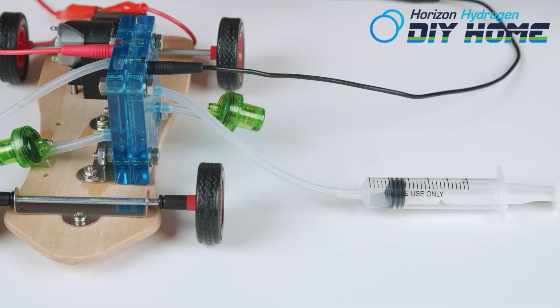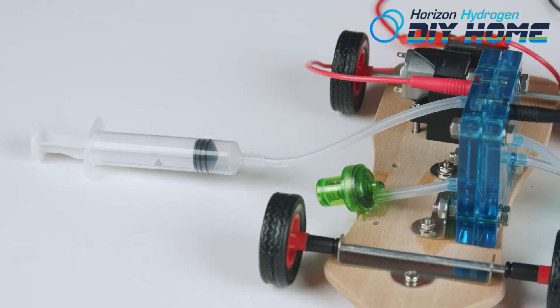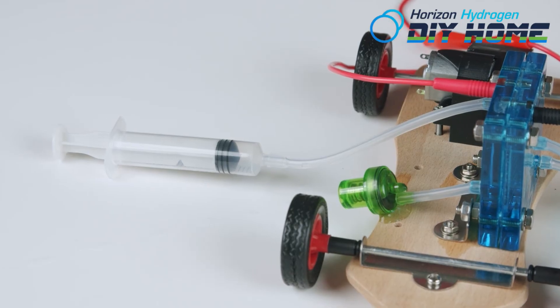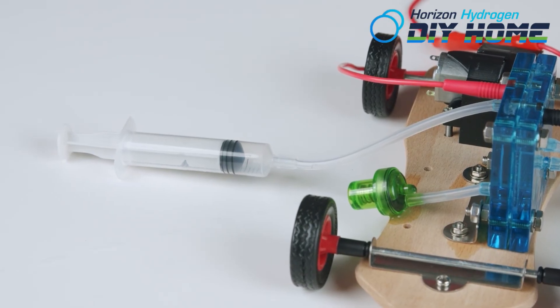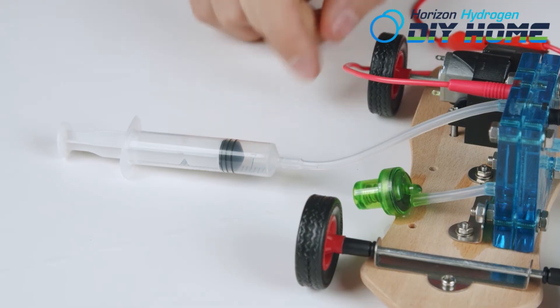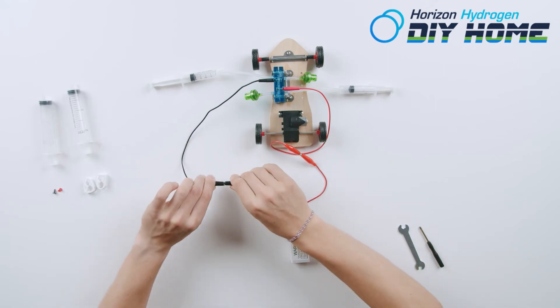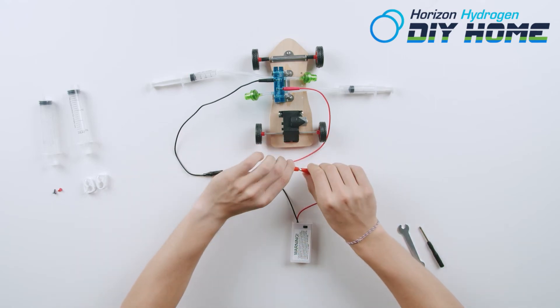You may need to help get the syringes started. Give each syringe a slight pull. Turn off battery pack once hydrogen syringe is full, the side marked H2. Turn off battery pack. Set aside the battery pack.